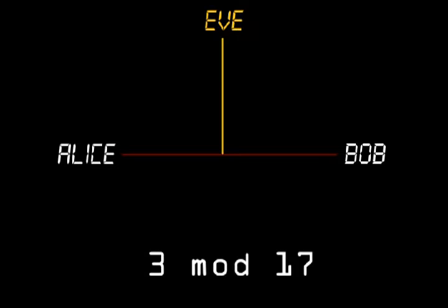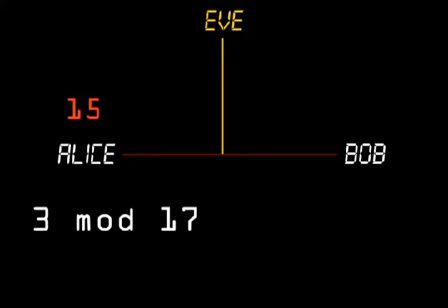Then, Alice selects a private random number, say 15, and calculates 3 to the power 15, mod 17, and sends this result publicly to Bob.